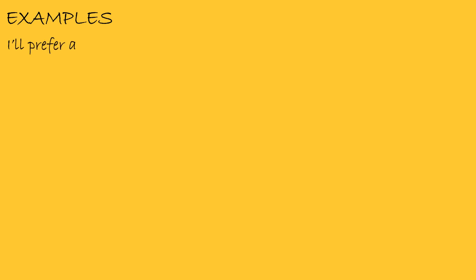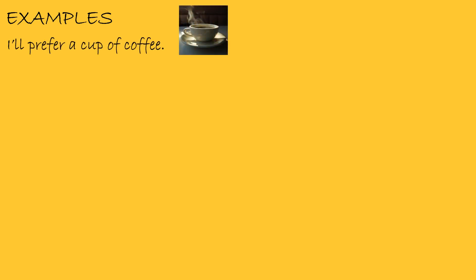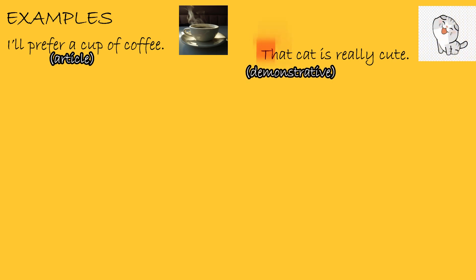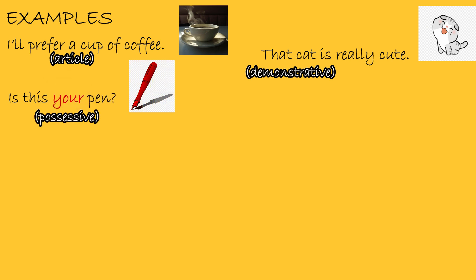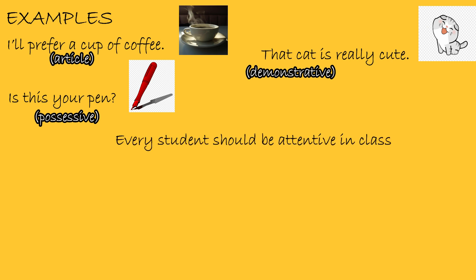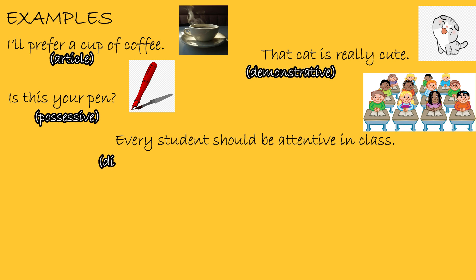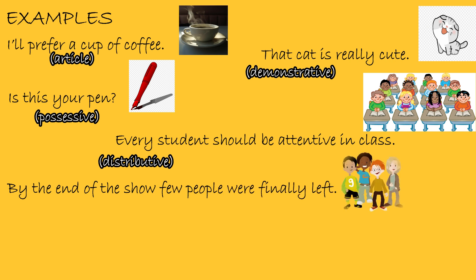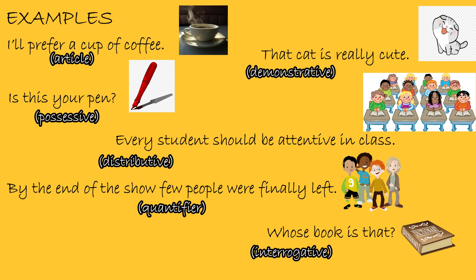Let us look at some more examples of determiners. I prefer a cup of coffee — the determiner is the article a. That cat is really cute — the determiner is the demonstrative that. Is this your pen? — the determiner is the possessive your. Every student should be attentive in class — the determiner is the distributive every. By the end of the show, few people were finally left — the determiner is the quantifier few. Whose book is that? — the determiner is the interrogative whose.